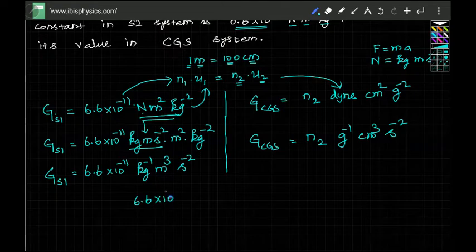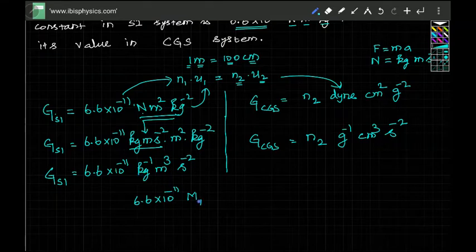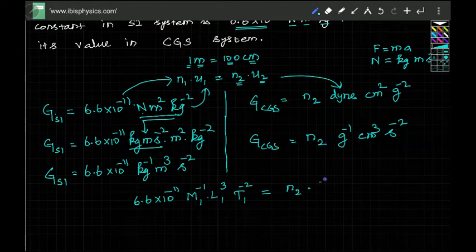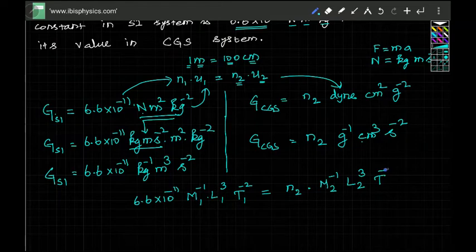Writing out N1·U1 = N2·U2: N1 is 6.6×10⁻¹¹, U1 has mass power −1, length power 3, and time power −2 in the first system. This equals N2 times mass power −1, length power 3, and time power −2 in the second (CGS) system.